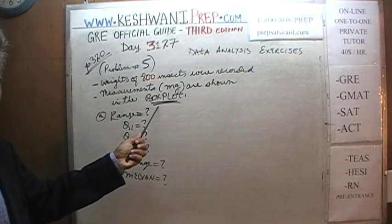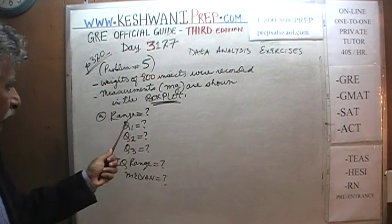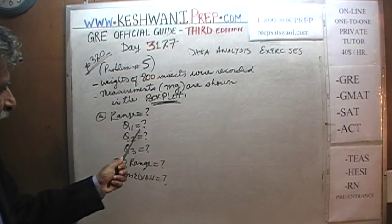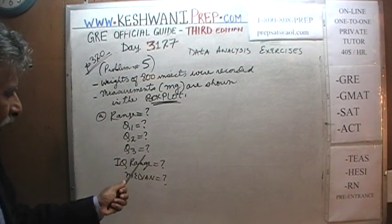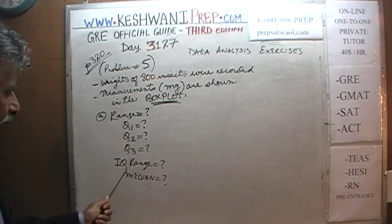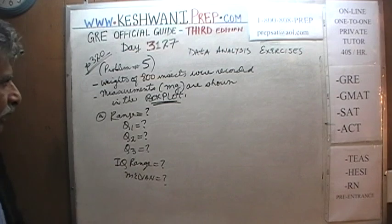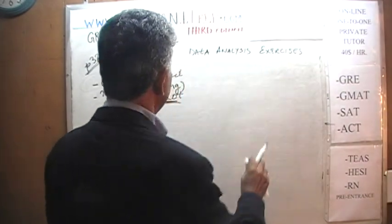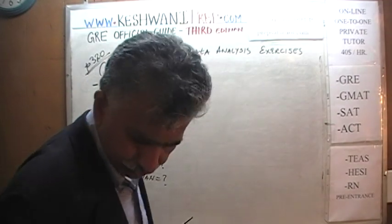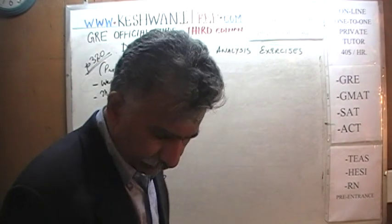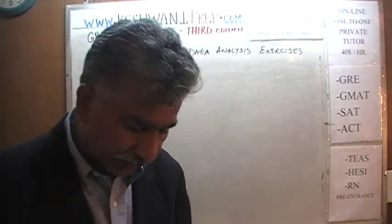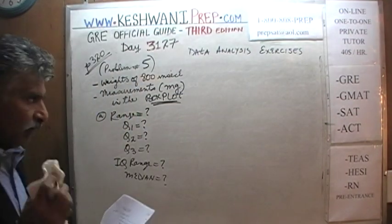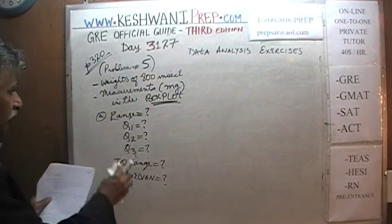A box plot is also called a box-and-whisker plot. We have to find the range, the demarcation for the first quartile, second quartile, third quartile, the interquartile range, and finally the median. I could have plotted this ahead of time but I did not do it on purpose — as we get the information, we will make a note of it.